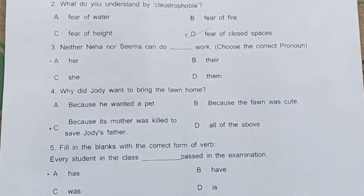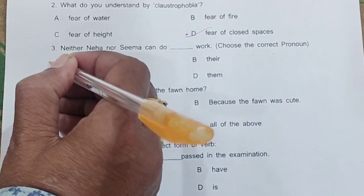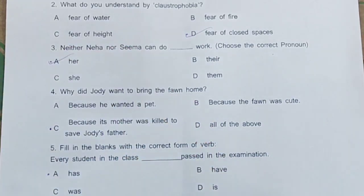Question 3: Neither Neha nor Sima can do dash work. Options: a) her, b) there, c) our, d) them. The correct answer is option A — her.